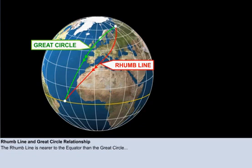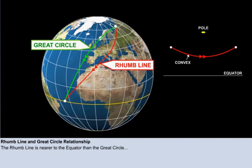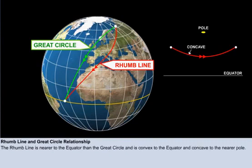The rhumb line is always nearer to the equator than its corresponding great circle path. The shape of the rhumb line can be described as convex to the equator. Conversely, it can be described as concave to the nearer pole.